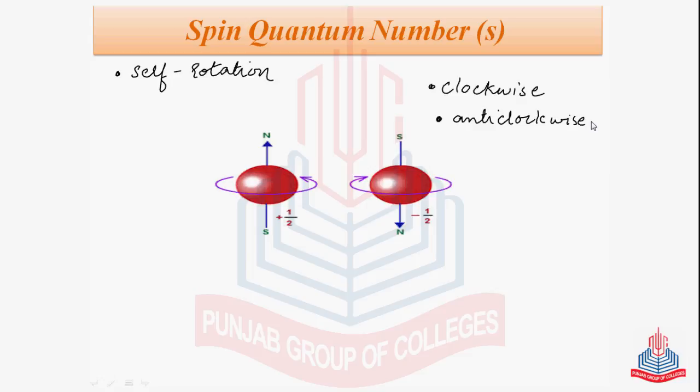As we have shown it with plus half or minus half, opposite magnetic fields are generated by the clockwise and anticlockwise spins of electrons. This spin motion is responsible for the doublet line structure. So what is this doublet line structure, or how did we come to know about the spin quantum number?